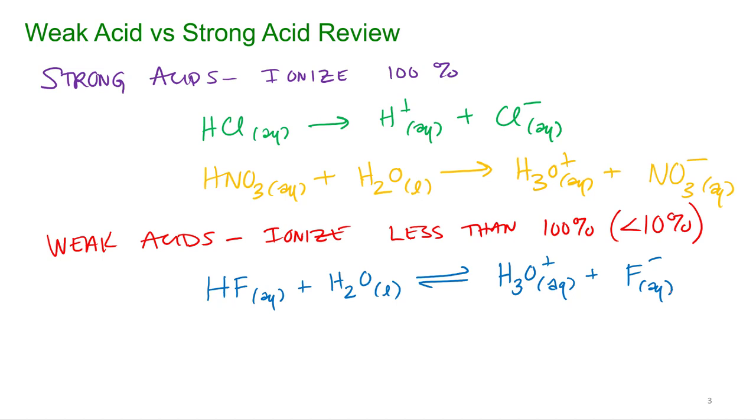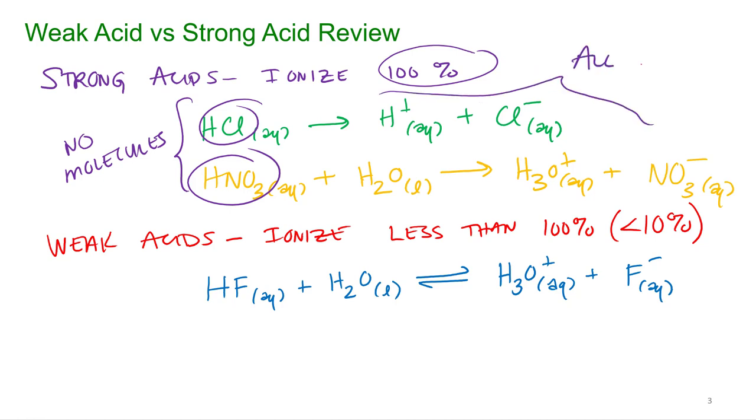Physically, what's in the solution is very different. For strong acids, you get 0%, no molecules left. So no nitric acid, no HCl in solution. They're not there. They're 100% ions, all ions. All ions.